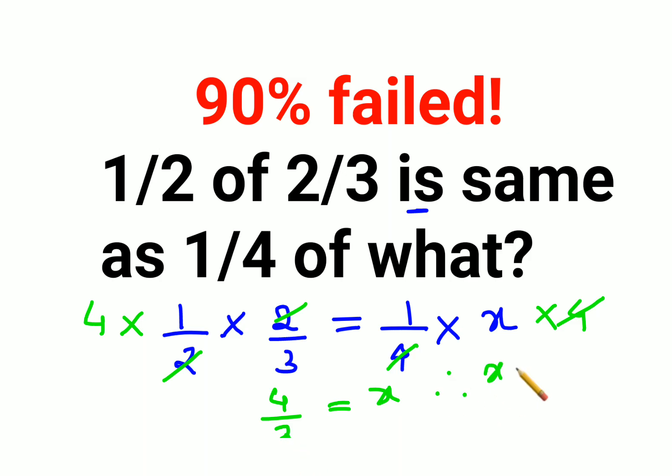So basically I can say value of x is either 4 upon 3 or, because it is an improper form, so if you convert it into mixed form, it is 1 and 1 by 3.